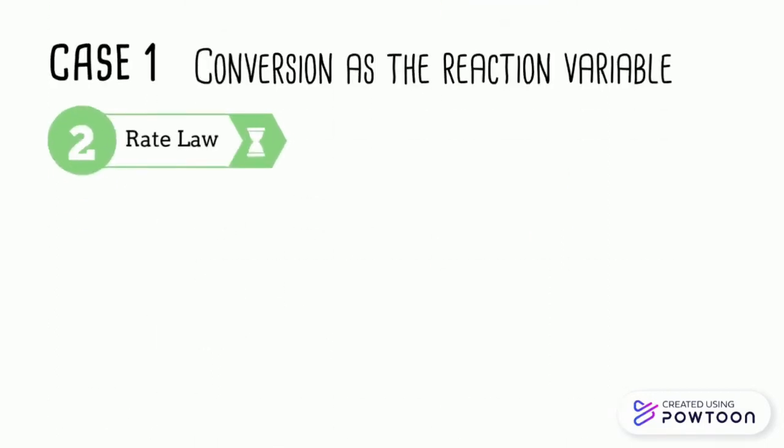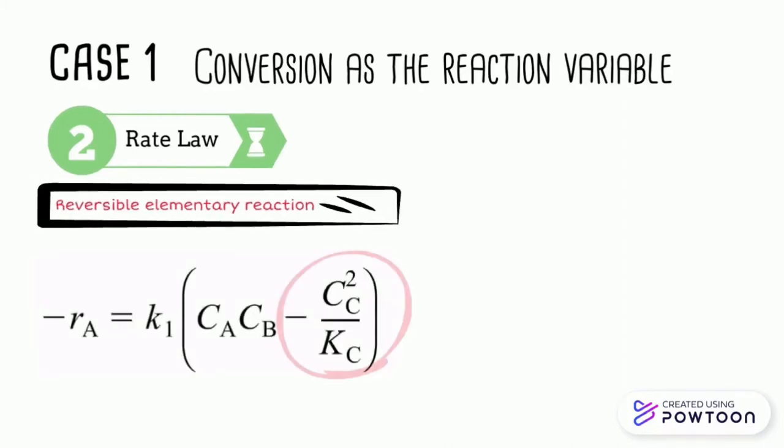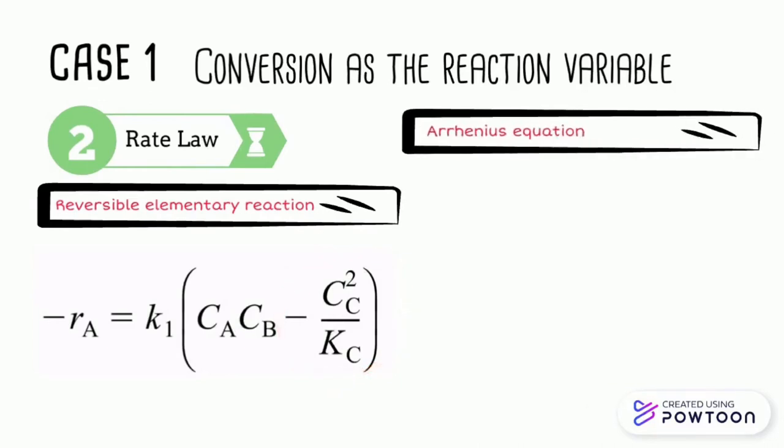Secondly, we need to find the rate law. The fact that it is a reversible elementary reaction should be taken into consideration. Then, the Arrhenius equation is used to get the reaction constant.